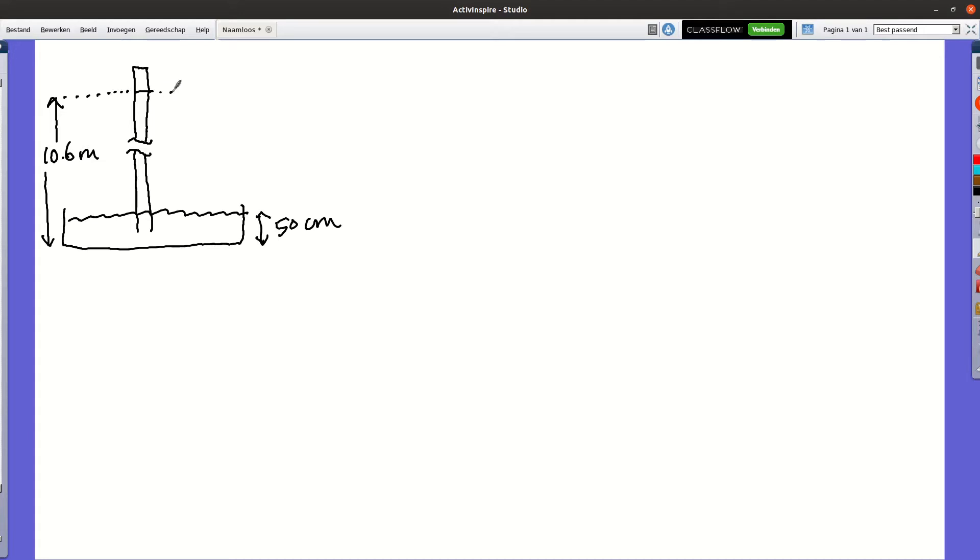The water column itself has a height of 10.1 meters. It's this water column that presses down on the water surface. So, the pressure of the water column is equal to the air pressure.